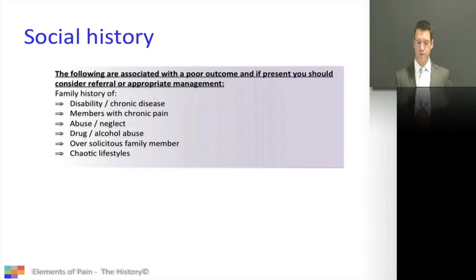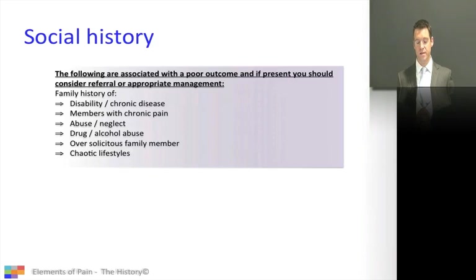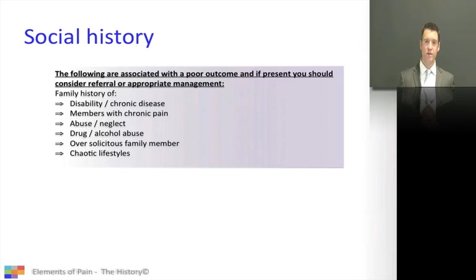Moving on to the social history — something we all forget about, always thought of last. Is there somebody living with a chronic disease in the family? I had a patient recently with fibromyalgia who was surrounded by two or three people with fibromyalgia — that makes management difficult. So who else in the family is living with pain or has a chronic disease and is in that chronic disease paradigm?